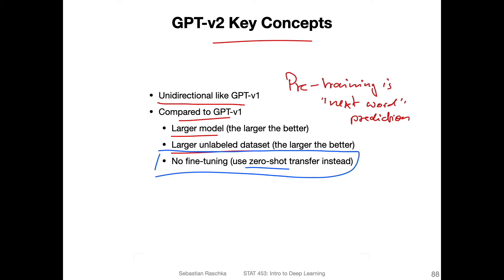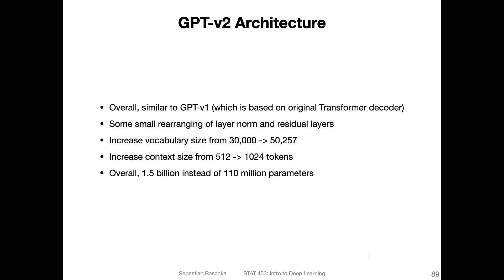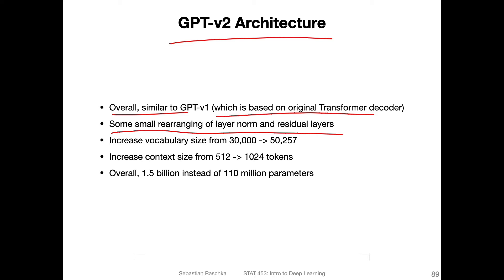One key thing to highlight is that they got rid of the fine-tuning. The architecture itself is overall similar to GPT version one — of course it's bigger — but it's still based on the original transformer decoder. They did some small rearranging of the layer norm and residual layers, but these are minor implementation details. They also increased the vocabulary size to almost twice the size, doubled the context size from 512 to 1024 input tokens so the model can capture more context. Overall, these changes resulted in a model of 1.5 billion parameters, compared to the original 110 million.